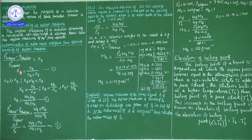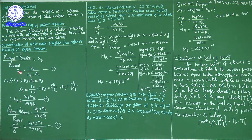Now, X_B is the mole fraction of the solute (B is the solute, A is the solvent). The mole fraction is defined as the number of moles of the component divided by the total number of moles present in the solution. So X_B = N_B / (N_A + N_B), where N_A is moles of solvent and N_B is moles of solute.